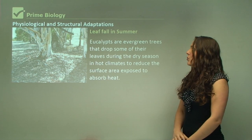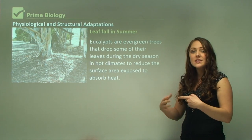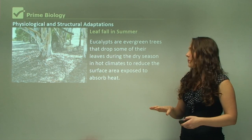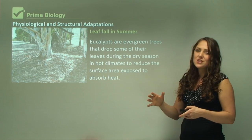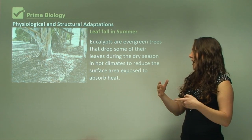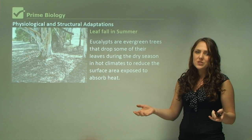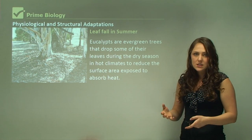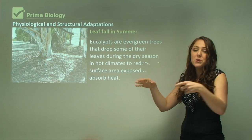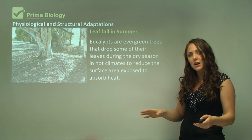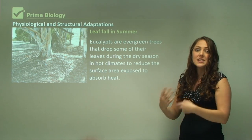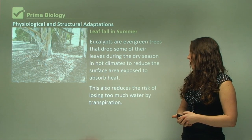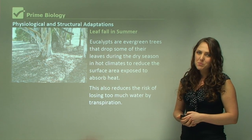Leaf fall in summer: some eucalypts and other plants may actually drop some of their leaves during summer in the dry season in hot climates. The aim is to reduce the surface area exposed to heat. It also decreases the metabolic processes of the plant because they don't need to maintain all of their leaves, and this reduces the risk of losing too much water by transpiration.